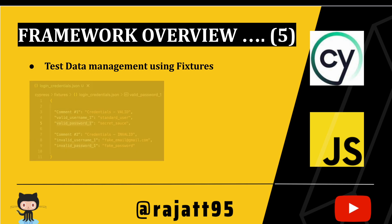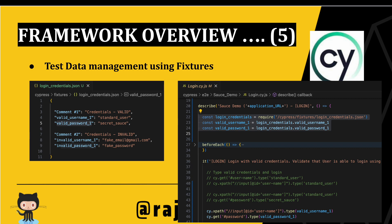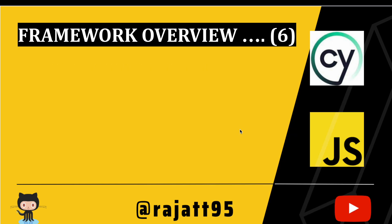Since we're automating the login scenario, we need a username and password. We'll use fixtures — a JSON file from which we pick the valid credentials. Rather than hard-coding the credentials inside each test case, we keep them in one JSON file. If you need to change credentials in the future, there is only one place to update, and that data can be reused across 10 or 15 test cases.